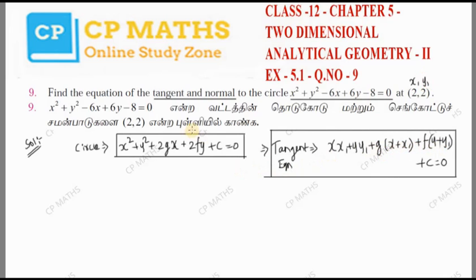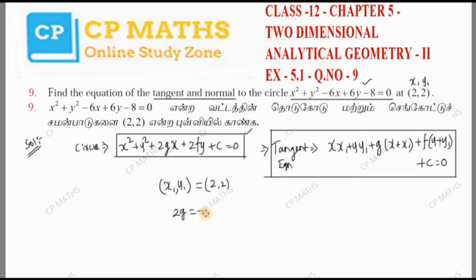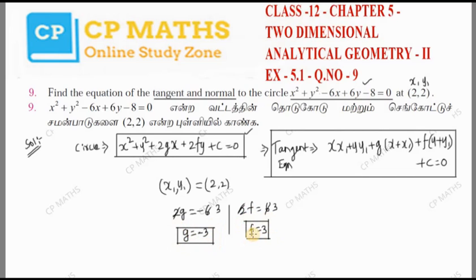We use the sequence of this equation after comparison. To write the tangent at point (x₁, y₁), we compare the given circle equation. We find: 2g equals minus 6, so g equals minus 3; 2f equals 6, so f equals plus 3. After comparing, the g value is minus 3 and f value is plus 3. Now if you know g, f, x₁, and y₁, you know all of this.